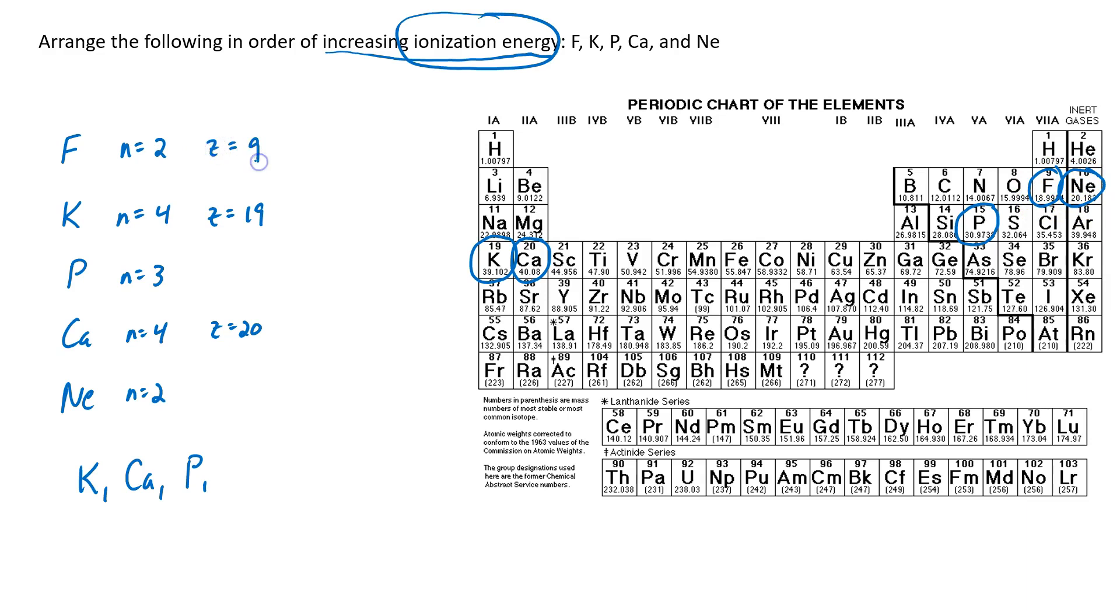Fluorine has nine protons. Neon has 10. Because neon has more protons, its electrons are going to be more attracted to the nucleus. So this is going to have the highest ionization energy. So we'll have fluorine and then neon.